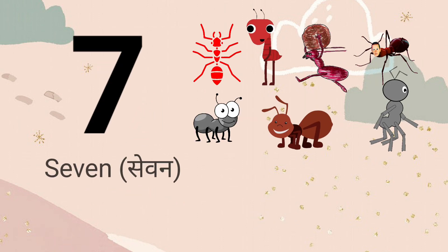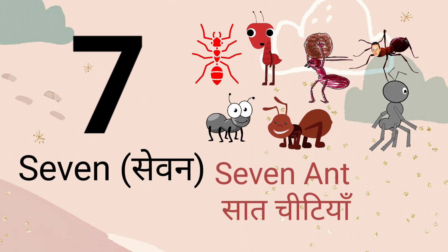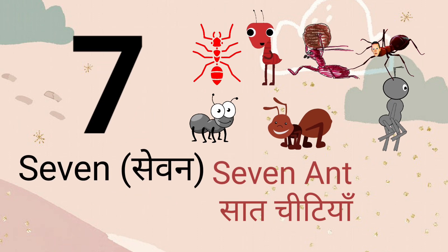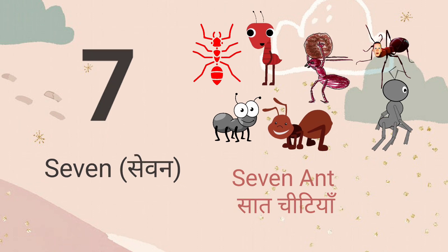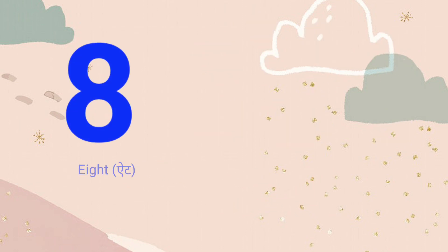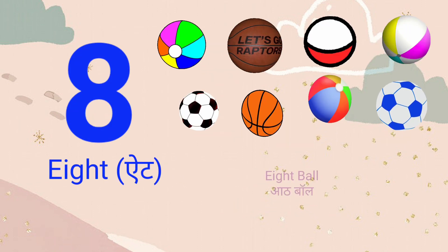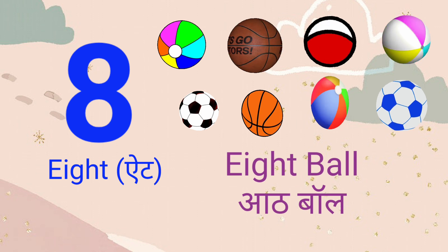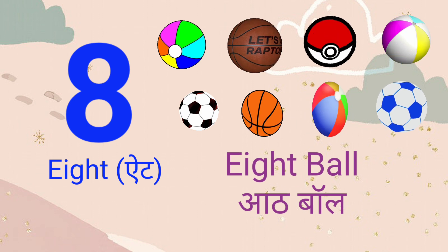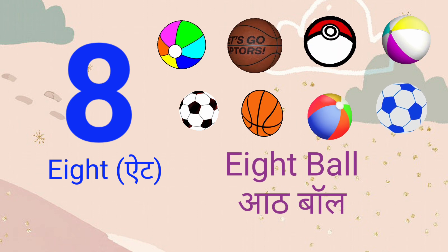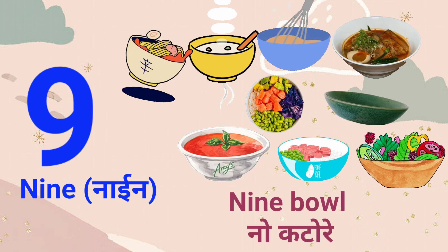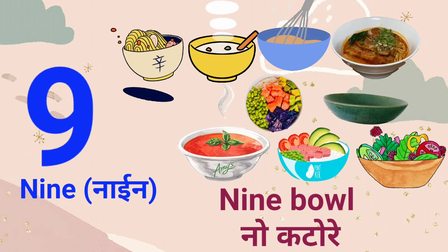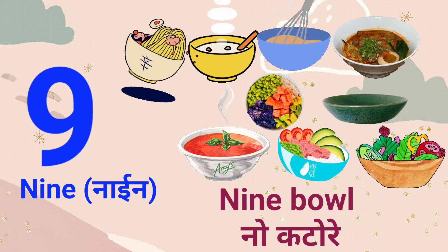Seven. Seven means saat. Eight. Eight means aath. Nine. Nine means nau.